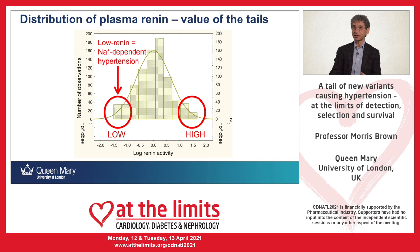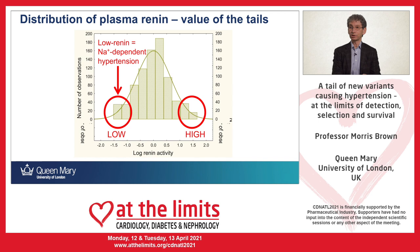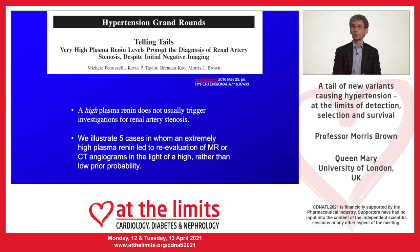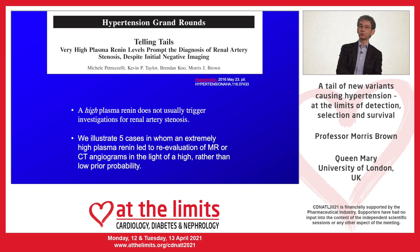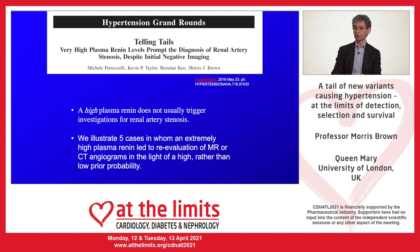I'm going to start at the right-hand side with a couple of clinical examples showing the value of looking not just at low renin hypertension but sometimes at the other end of the distribution. We wrote a paper in Hypertension after seeing five patients who had presented with difficult hypertension, where the possibility of renal artery stenosis had been dismissed because initial imaging of the renal vasculature had been negative. The message is that if the plasma renin is extremely high, do not take as absolute gospel the initial report from renal artery imaging.